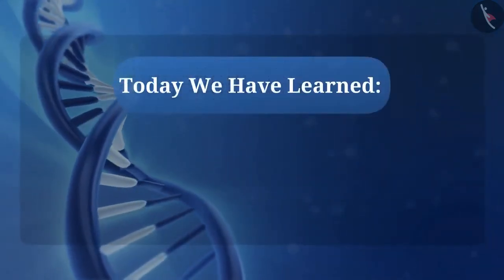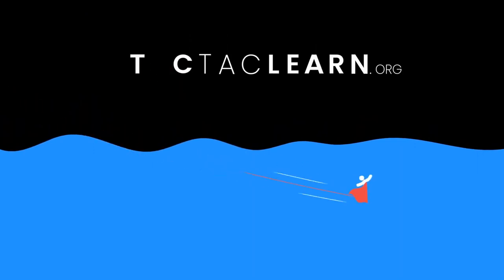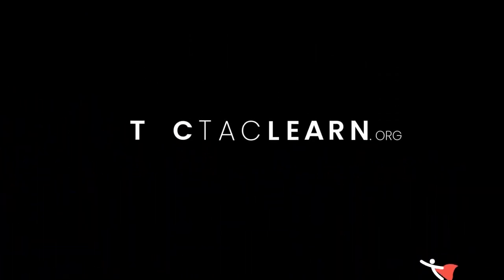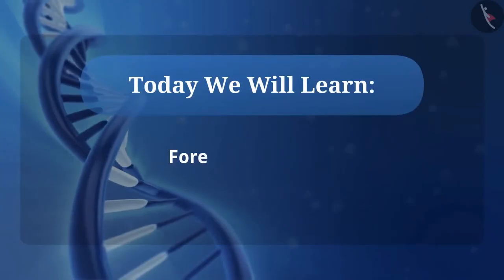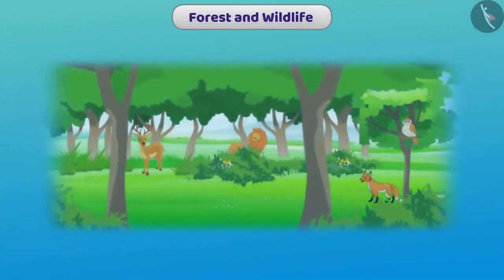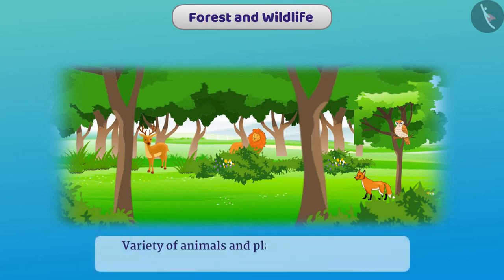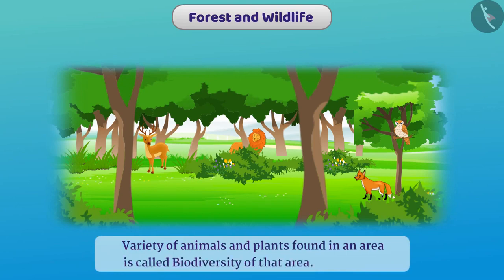Today we have learned the five R's to save the environment. Forests are vast areas on which different species and different forms of plants and animals are found. The variety of animals and plants found in an area is called the biodiversity of that area. Forest and wildlife are important resources for us and the environment, and they also maintain balance in the environment.